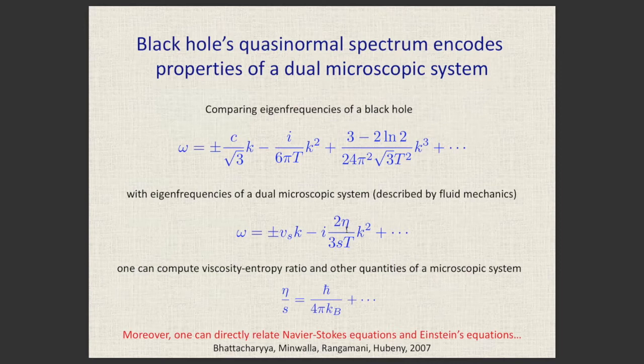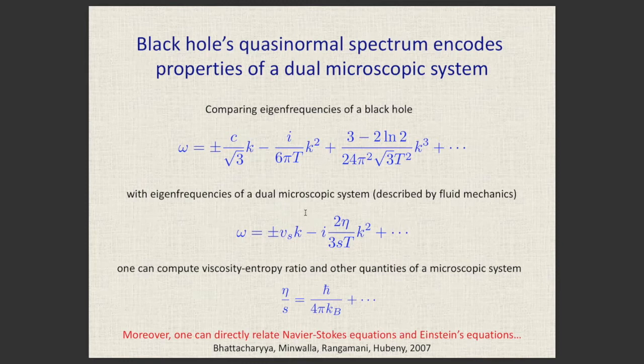This comparison allows one to read off transport coefficients from black hole calculations. In a five-dimensional dual black hole, one can directly compare quasi-normal mode frequencies with the hydrodynamic dispersion relation and identify the speed of sound and the shear viscosity to entropy density ratio. One can go beyond this and directly relate Navier-Stokes equations to Einstein's equations — this is known as the fluid-gravity correspondence.